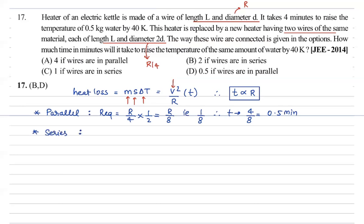R by 4 plus R by 4 equals R by 2. Comparing to 1 by 2, this time becomes 4 by 2, which equals 2 minutes. So option B is correct and option D is correct.